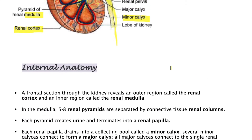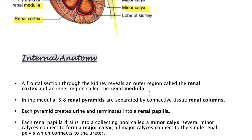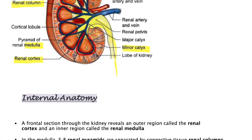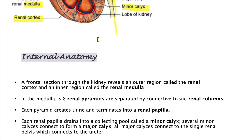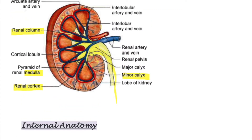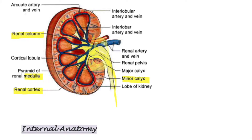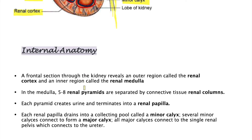We spoke about the medulla, the pyramids, the renal papilla, the major and minor calyces, and how it all goes into the renal pelvis and then directly into the ureter. That's the brief anatomy of what really goes on.